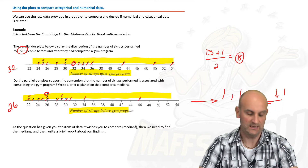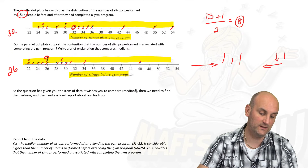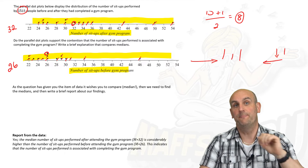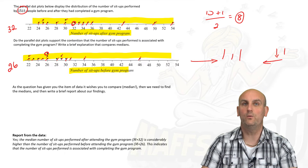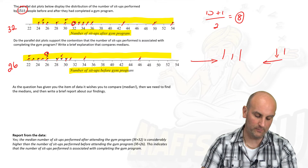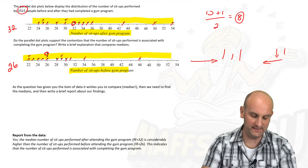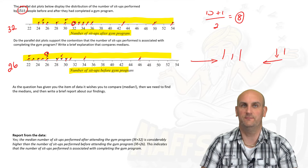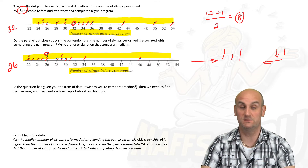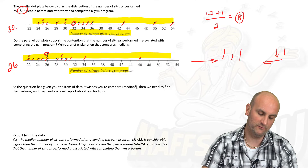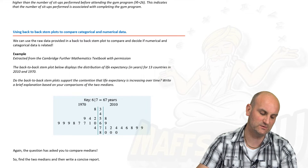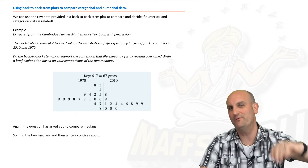We can see the difference clearly. There does seem to be an association between the number of sit-ups before and after the gym program when we compare the medians. The report reads: the median number of sit-ups performed after attending the gym program, 32, is considerably higher than the number performed before attending the gym program. This indicates that there is an association.